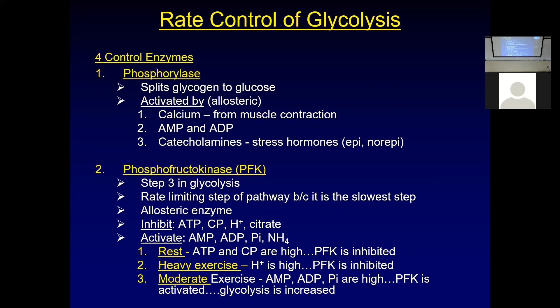Let's start with phosphorylase. You store carbohydrate in your body as glycogen — glycogen in your liver and glycogen in your muscle. When we're doing muscle contractions, we want to mobilize muscle glycogen to free up glucose, which can then go through glycolysis. The muscle side is what we're going to use initially in exercise.